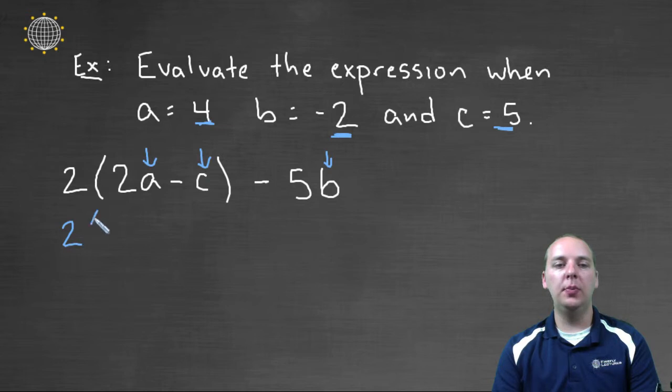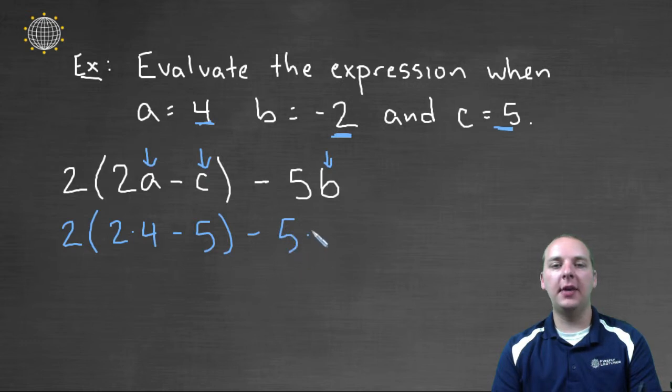We would have 2 parenthesis, 2 times 4, that's 2 times a, minus c, that's minus 5, minus 5 times b, but b is negative 2.